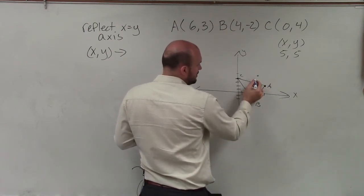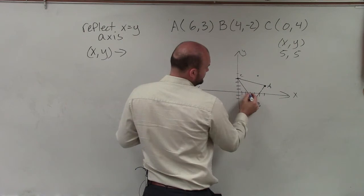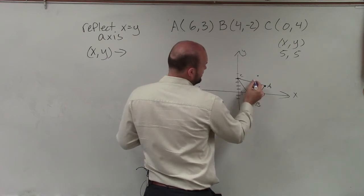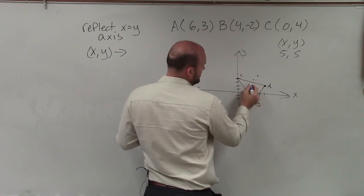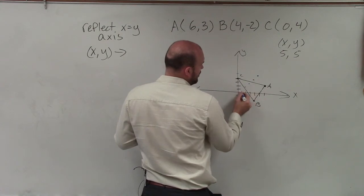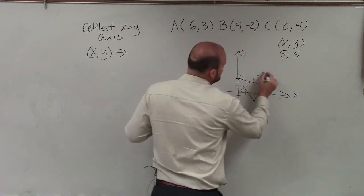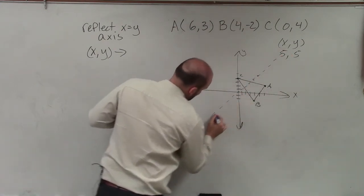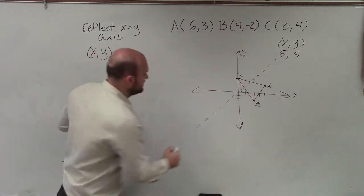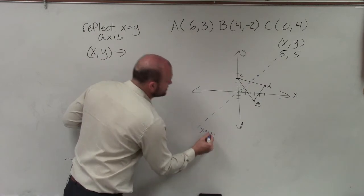And if I did 4 equals 4, that would be right there. And if I did 3 equals 3, that would be right there. 2 equals 2, 1 equals 1, 0 equals 0, and so forth. So you can see this line of symmetry pretty much cuts it in there, and that is what we call the y equals x line.